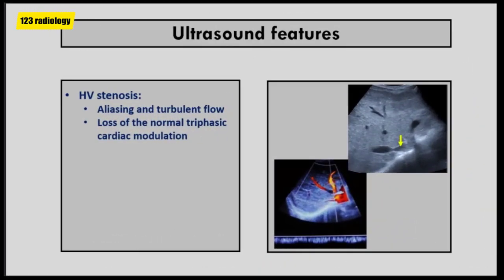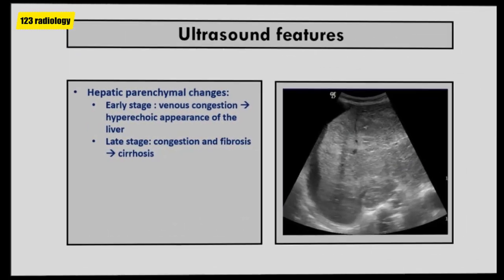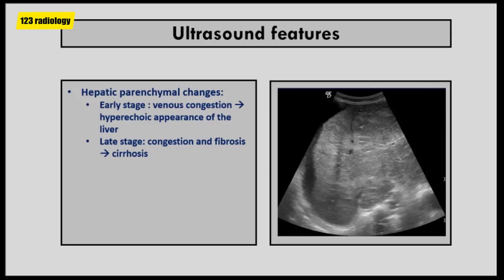Hepatic vein stenosis is less common than thrombosis. Like thrombosis, stenosis can involve one or several hepatic veins; it may be focal or diffuse, partial or complete, and most commonly affects the osteal segments of hepatic veins. On color Doppler ultrasound, stenosis is manifested by aliasing effect and turbulent flow with loss of the normal triphasic cardiac modulation. During the early stage of disease, venous congestion results in a hyperechoic appearance of the liver on ultrasound.